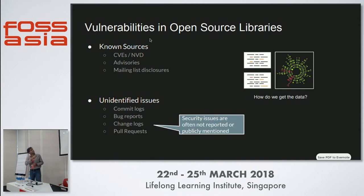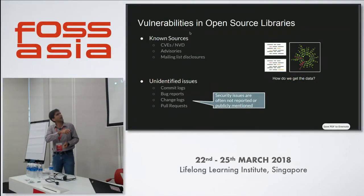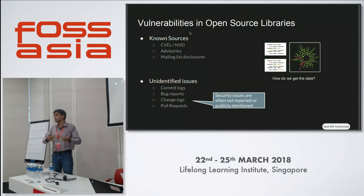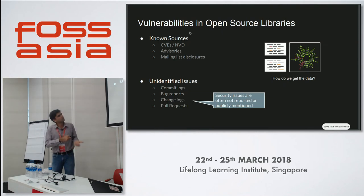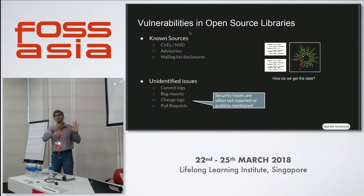However, these public sources represent a very small percentage of known issues. In ecosystems like Golang or npm, people rarely register a CVE — they just patch the issue and move on. A lot of security-relevant data actually resides in software engineering artifacts like commit logs, where someone might just commit with a message like 'fixing XSS', or in public bug reports on Bugzilla or similar boards. Security issues are often not formally reported, so if you're only tracking NVD or CVEs, you're likely to miss a lot of library vulnerabilities.